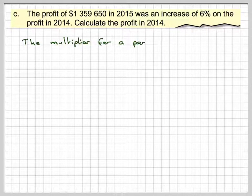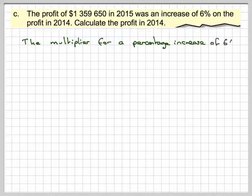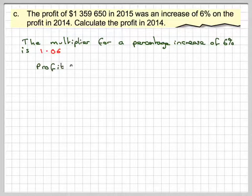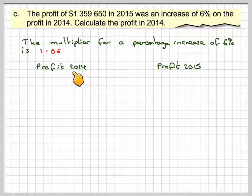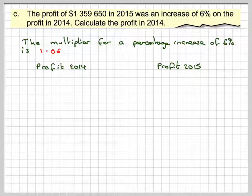So, we do the same sort of thing. The multiplier for percentage increase of 6% is 1.06. Set it out like this. So, profit of 2014, profit of 2015.